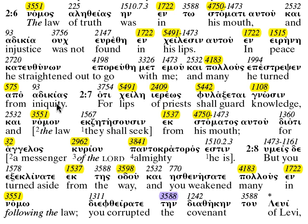In verse 7: for lips of priests shall guard knowledge — the hierarchy of the priest shall guard, 'phylox,' a prophylactic, something that guards in front — shall guard knowledge, 'gnosine,' gnosis, knowledge. For the lips of the priests shall guard the knowledge. If the priests aren't doing this, then how can the people ever know? And they shall seek the law — 'nomon,' astronomi — from his mouth. They shall seek the law of the Lord.